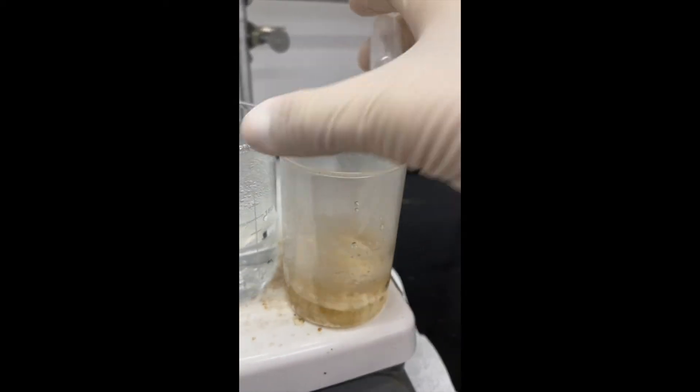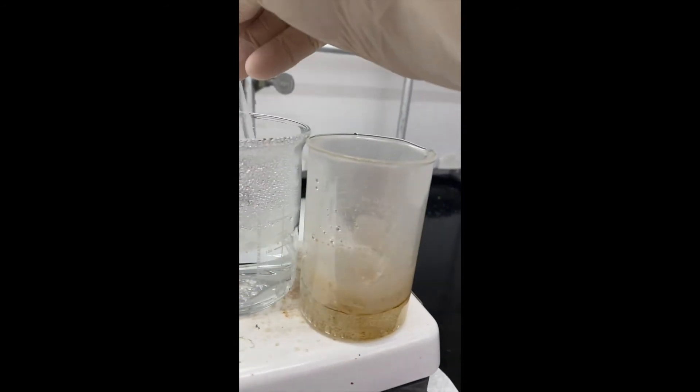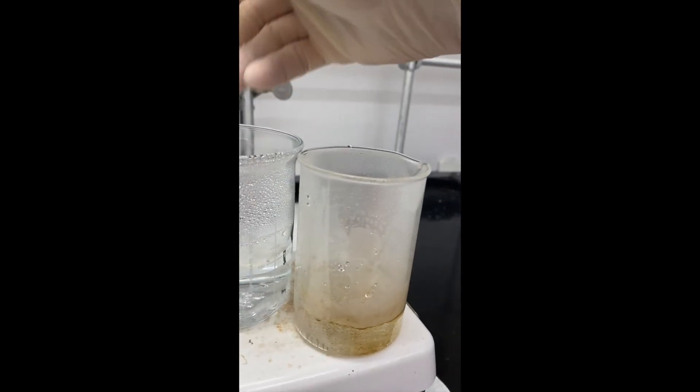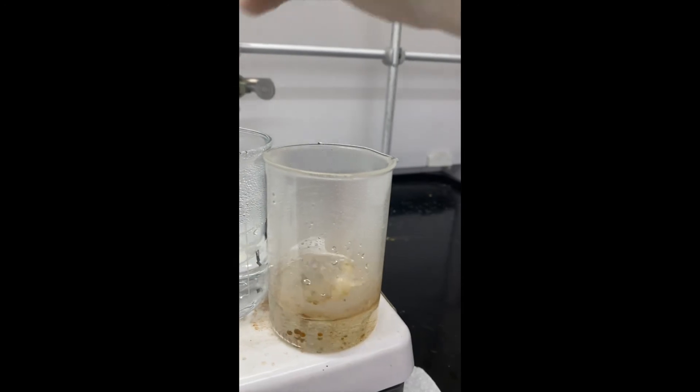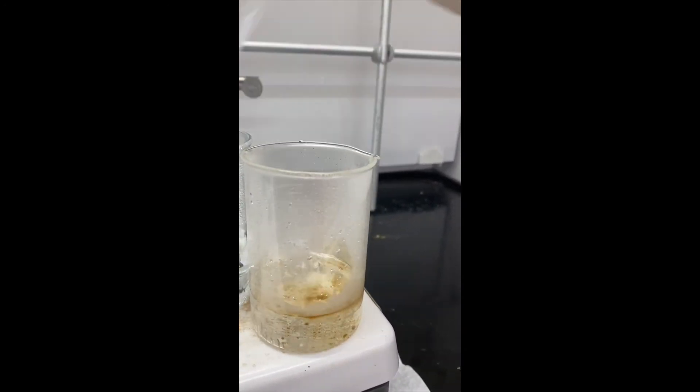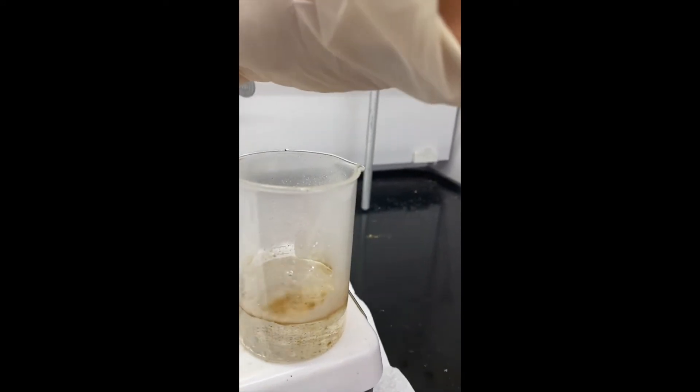So you can see we've got some discoloration in there. It actually looks like there's more than just our unknown. We've got this solid on the side here we want to dissolve. We're just using this transfer pipette to move solvent over a little bit at a time.